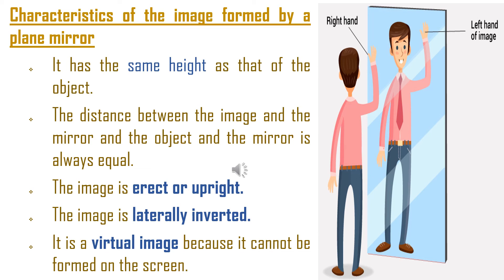For example, if you are standing 50 centimetres away from the mirror, the image produced in the mirror will also be 50 centimetres away from the mirror. The fifth point is that the image is laterally inverted. Lateral inversion means when the object raises the right hand in front of the mirror, the image appears to raise the left hand. This is called lateral inversion.